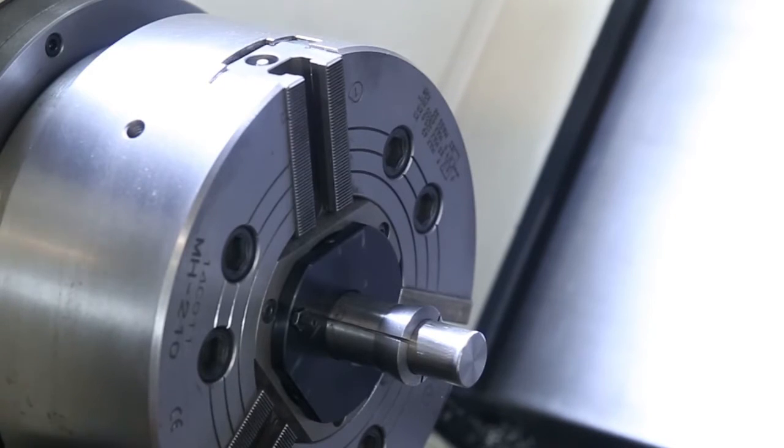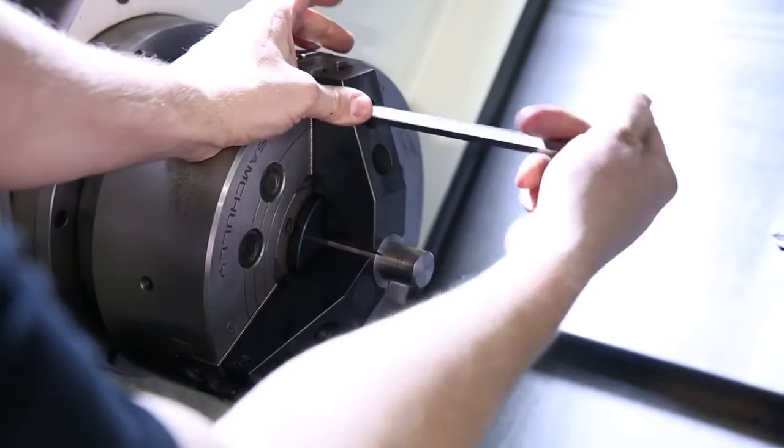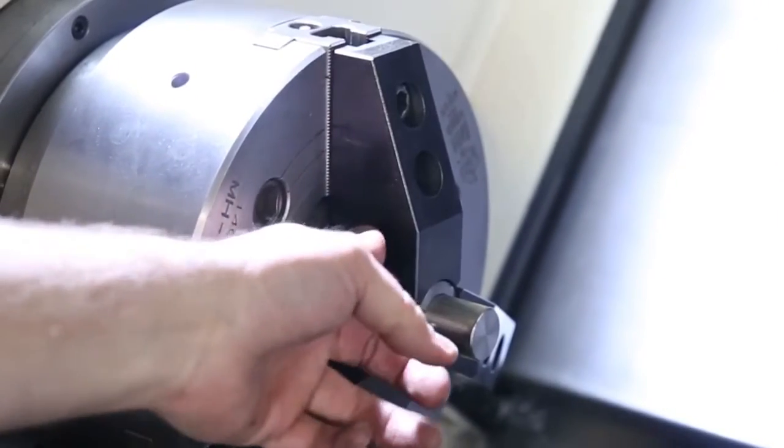At NubTools, we produce a CNC collet chuck system for CNC lathes. This allows you to run 5C collets on your CNC lathe without removing your chuck, eliminating the need to bore soft jaws for small diameter parts.